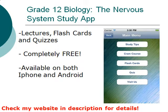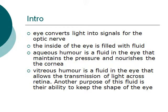The eye converts light into signals for the optic nerve. The inside of the eye is filled with fluid. Aqueous humor is a fluid in the eye that maintains the pressure and nourishes the cornea. Vitreous humor is a fluid in the eye that allows the transmission of light across the retina.